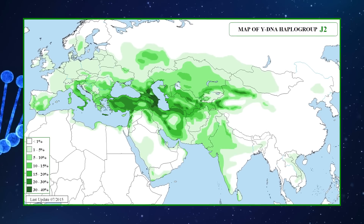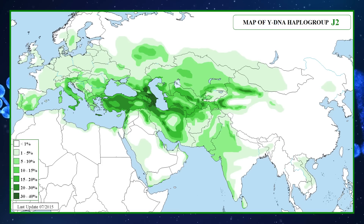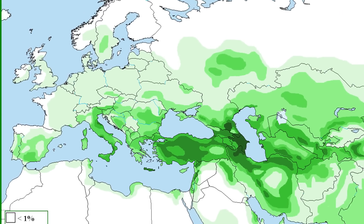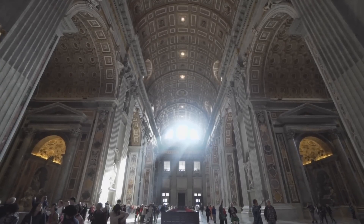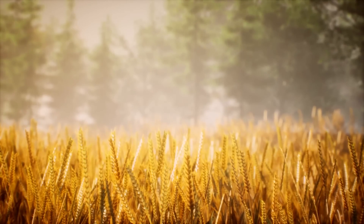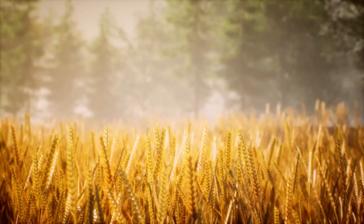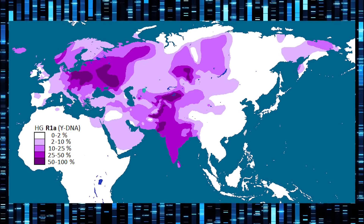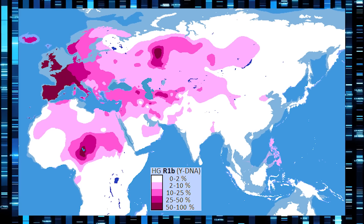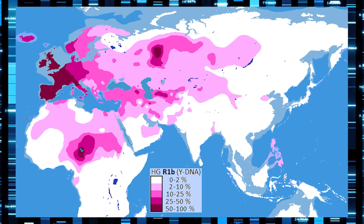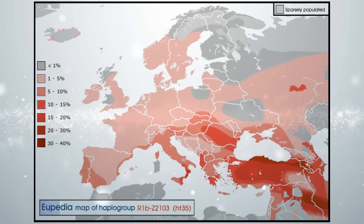J2 is another quite common haplogroup in Southeast Europe, found in anywhere between around 5 and 40% of men depending on the area. It is especially high in countries such as Greece, the island of Cyprus, as well as Turkey. J2 is strongly associated with the early spread of agriculture, and it likely originated in the Near East around 25,000 years ago. Two other Y-DNA haplogroups worth noting in this region are R1a, at between 10 and 30%, and R1b, at between 5 and 20%, both associated with the Indo-European migrations from the steppe that began around 3000 BC. A subclade of R1b called Z2103 is a particular variation of R1b found in this region.